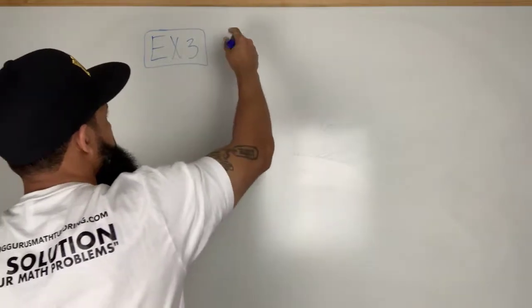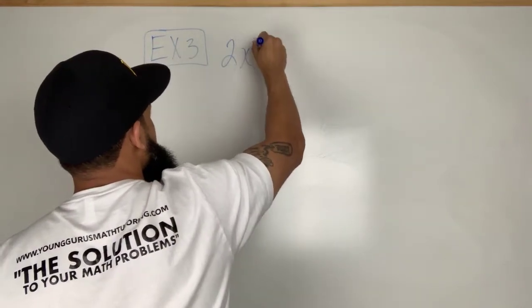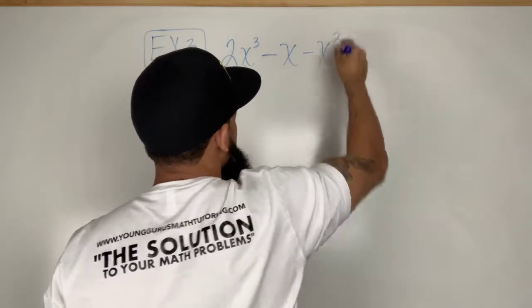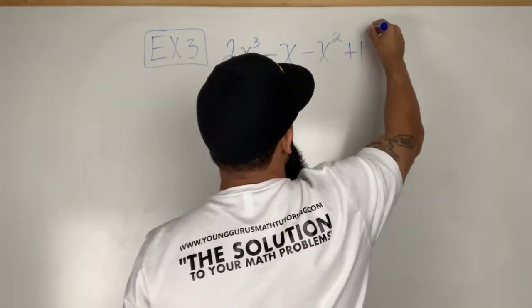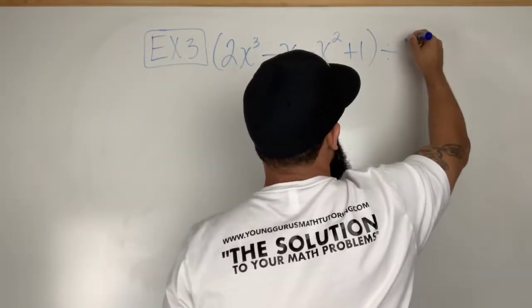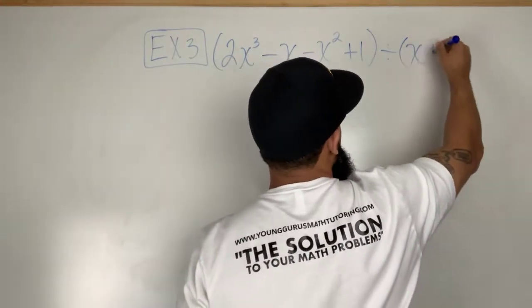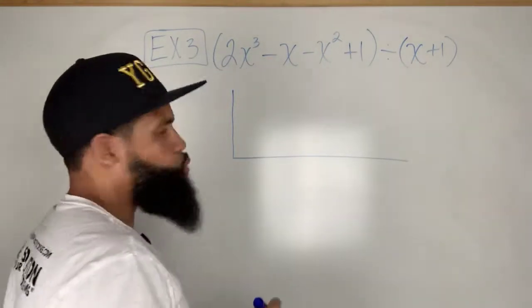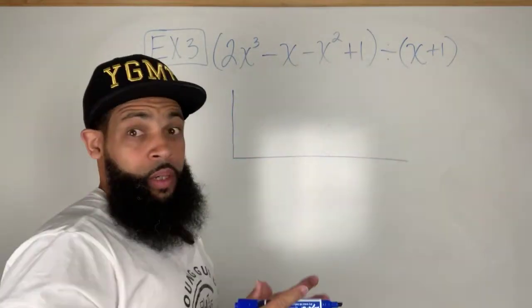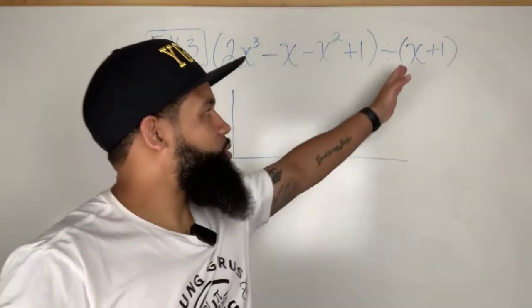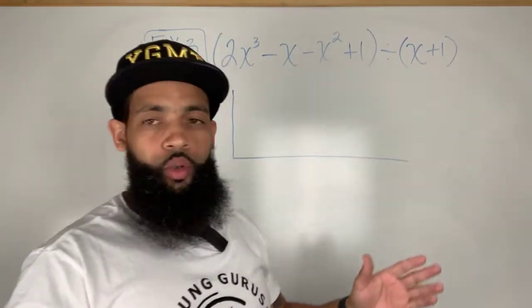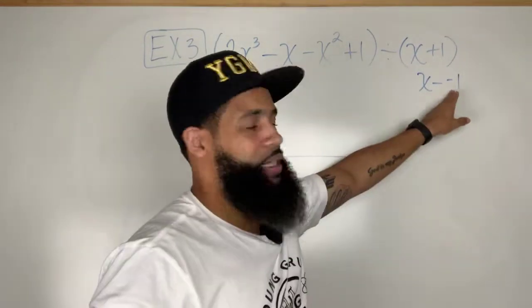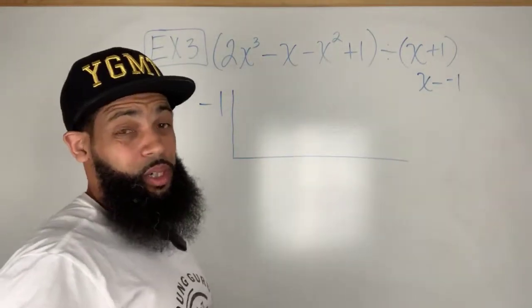So here I have 2x to the third power minus x squared plus 1, all right, and I'm dividing that by x plus 1. Now notice since this is plus 1, the formula tells us it's in the form of x minus k for that constant. Since this is a plus, this is the same thing as saying x minus negative 1, so I need to put negative 1 here because the formula or the rule is based off of subtraction.